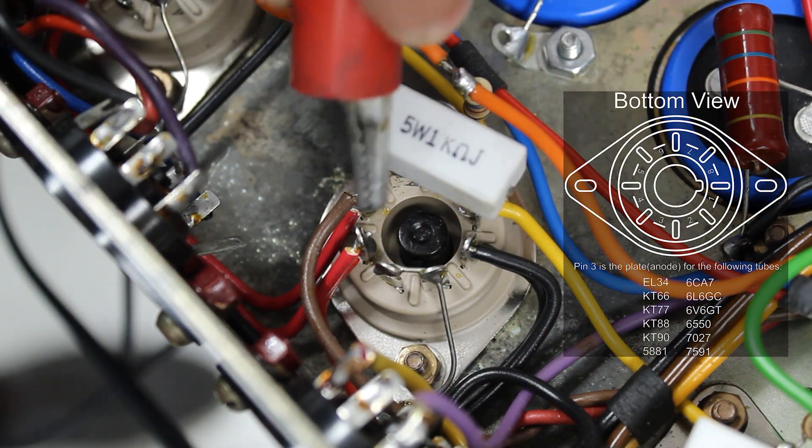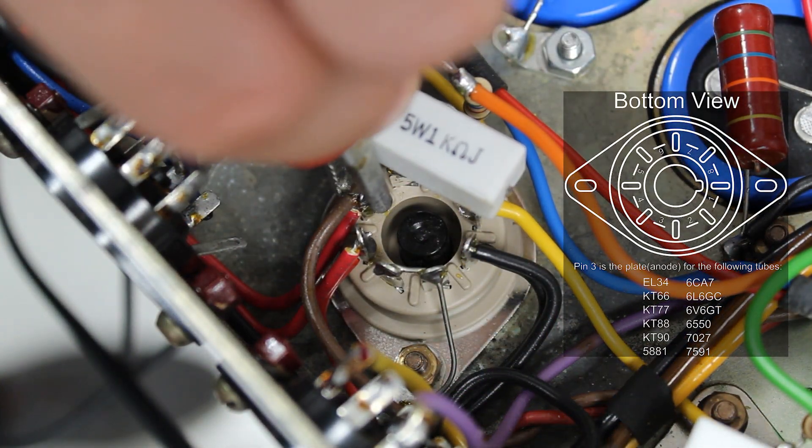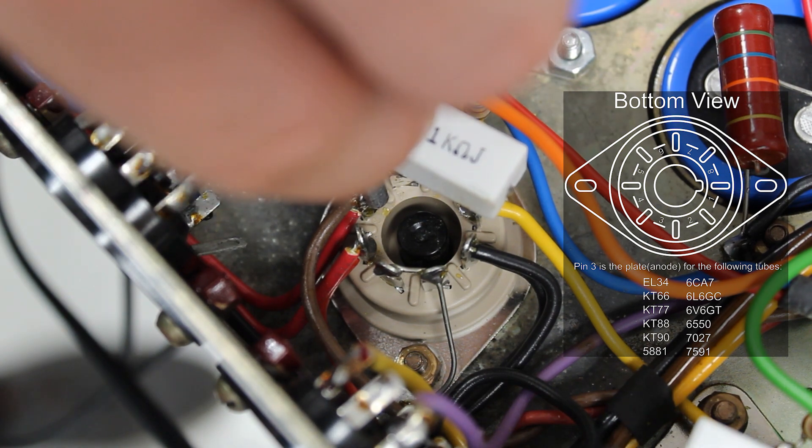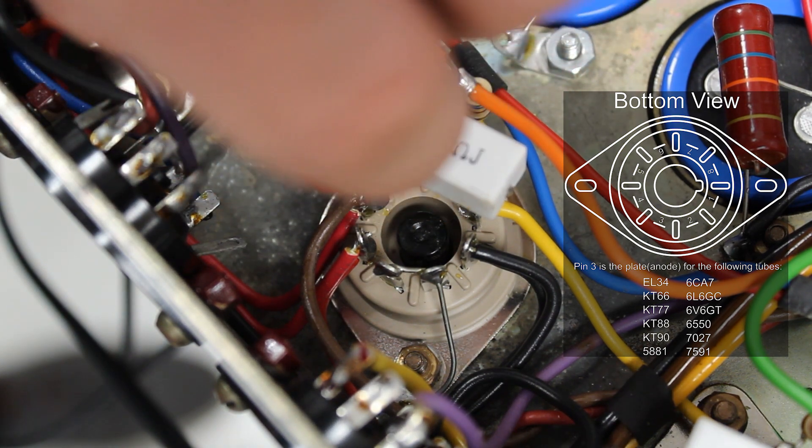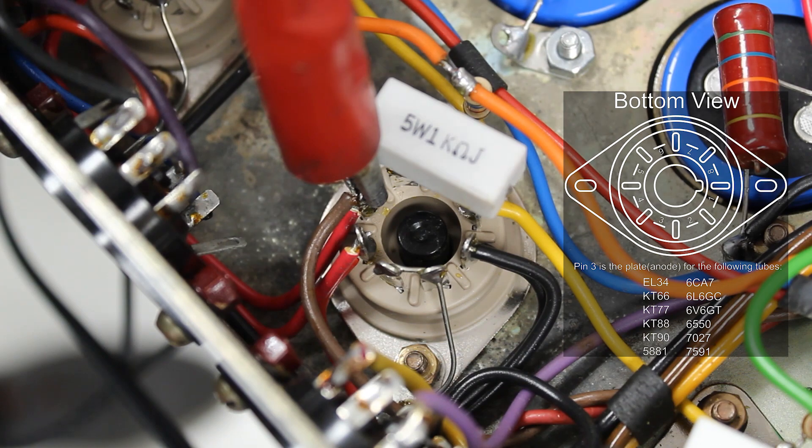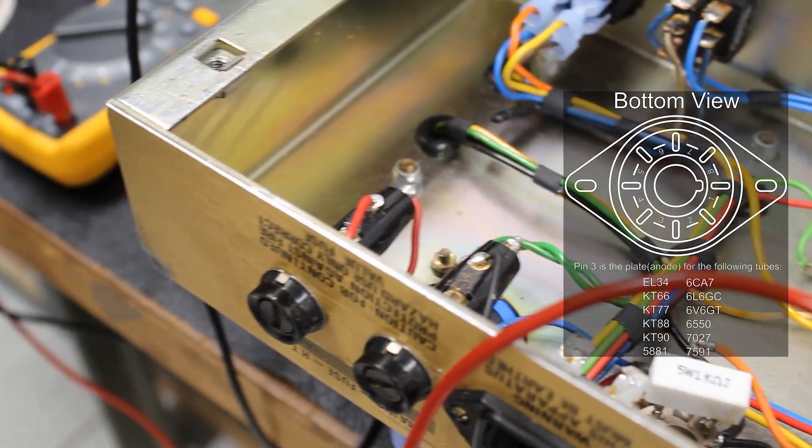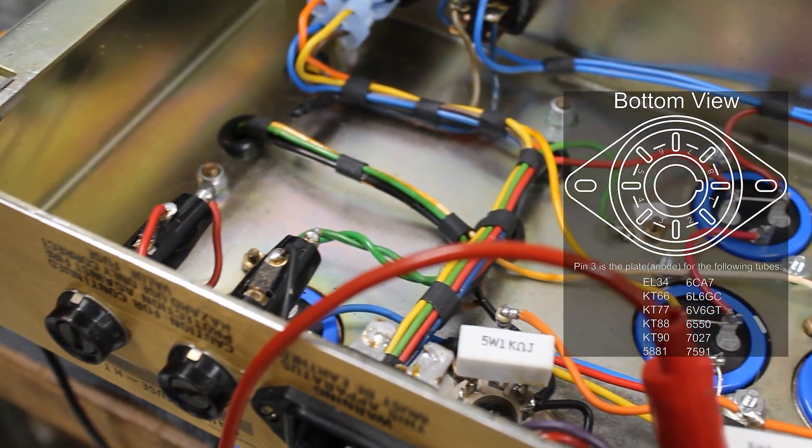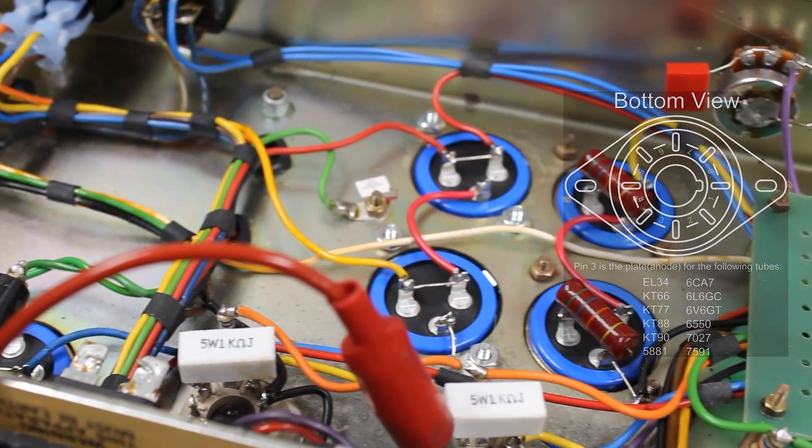Once this is complete, you will need to connect your multimeter to the plate of one of the power tubes. For most octal tubes, this is going to be pin 3. If you do not see your tubes on this list, please check your amp schematic or the tube datasheet. The negative probe on your multimeter should be connected to the ground.